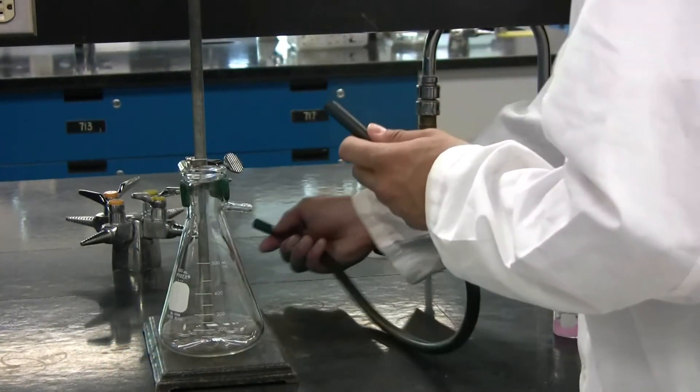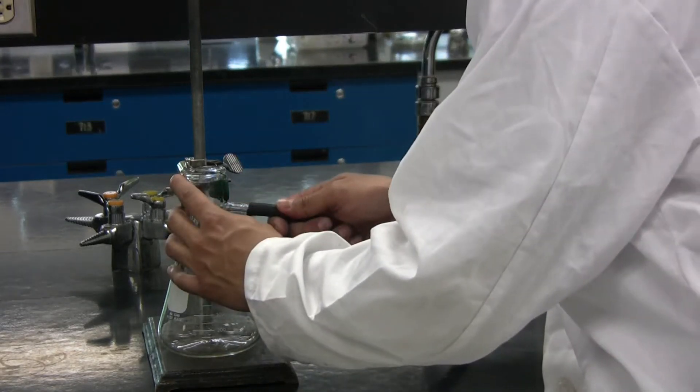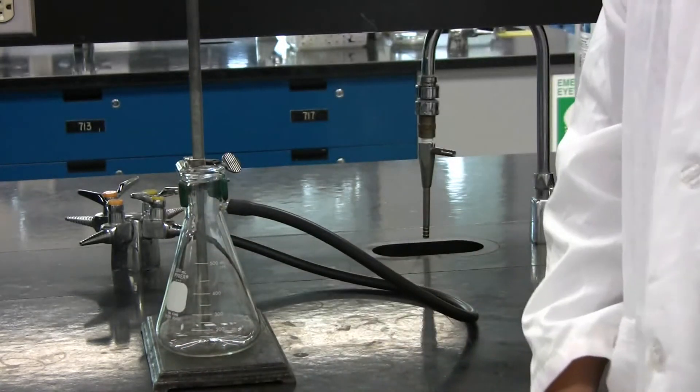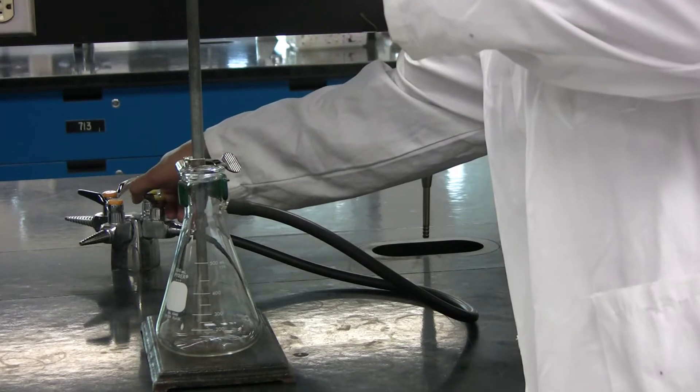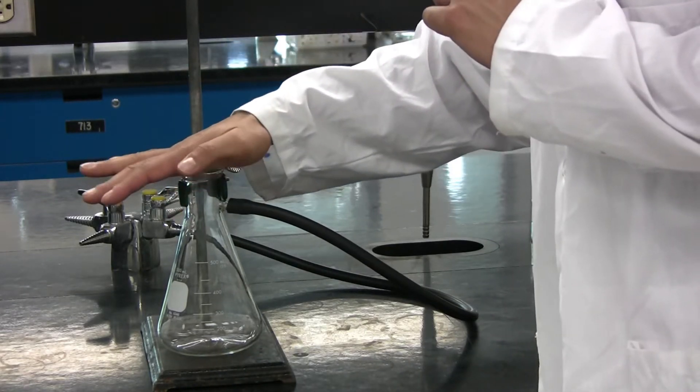Next, connect the vacuum hose to the vacuum and to the vacuum Erlenmeyer flask. Now, turn on the vacuum valve and test it with your hand. You should feel suction.